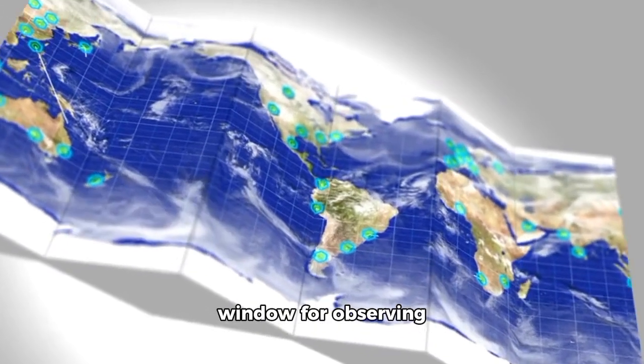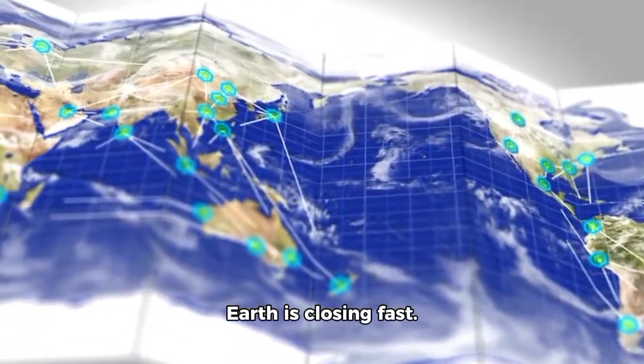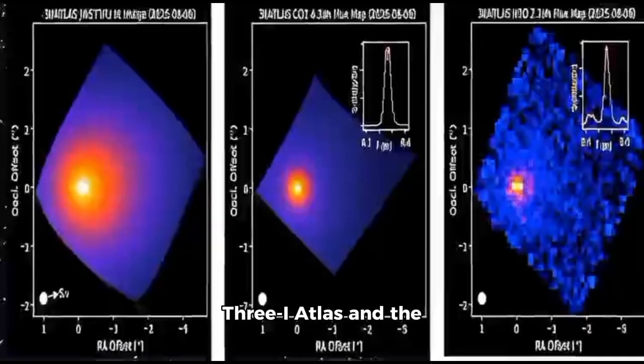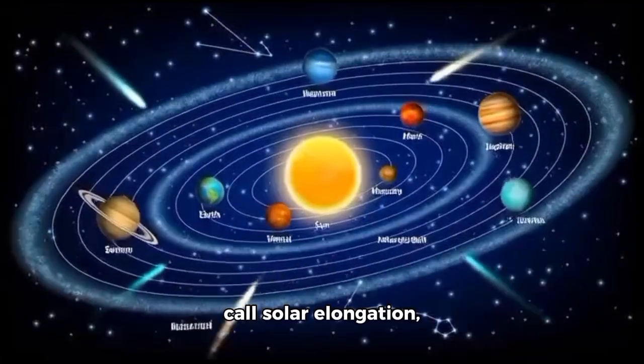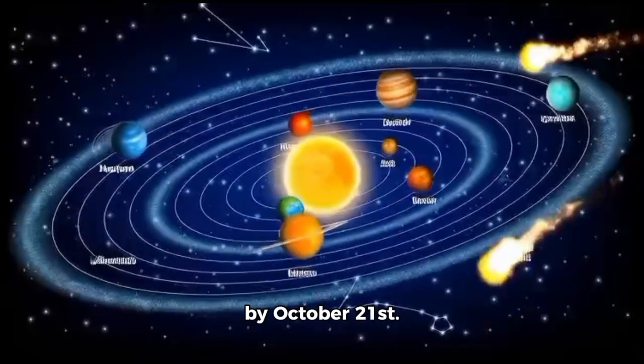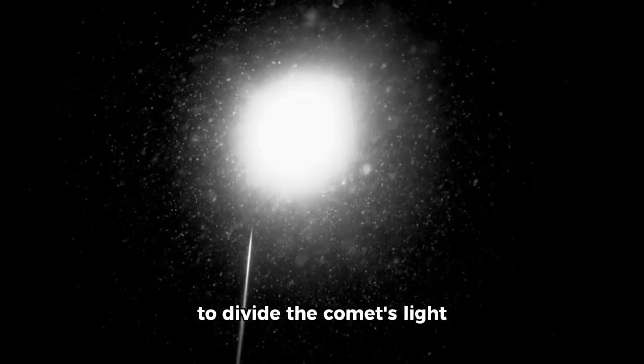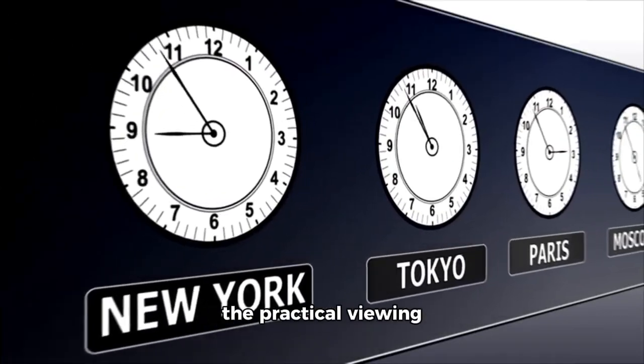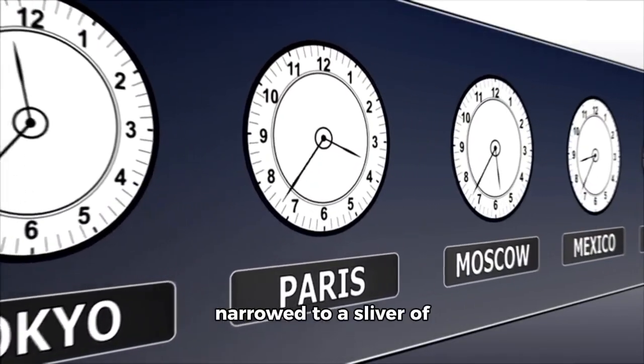By early October, the window for observing 3i Atlas from Earth is closing fast. Each evening, the comet dips lower into the twilight, pressed ever closer to the glare of the sun. The angle between 3i Atlas and the sun, which astronomers call solar elongation, shrinks below 30 degrees by October 21st. That's the threshold beyond which the largest ground-based telescopes struggle to divide the comet's light from the sky's overwhelming brightness. For most of the world, the practical viewing window has already narrowed to a sliver of time just after sunset. With the comet barely clearing the horizon before vanishing into the haze, amateur networks are scrambling to capture usable images.